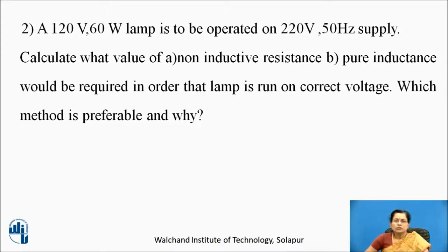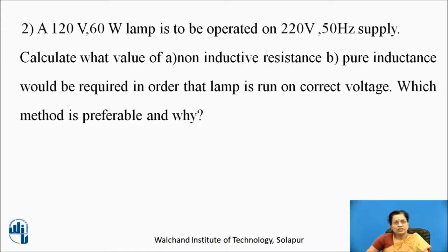Now we are going to solve the second numerical. A 120 volt, 60 watt lamp is to be operated on 220 volt, 50 hertz supply. Calculate what value of A non-inductive resistance and B pure inductance would be required in order that the lamp runs on correct voltage. Which method is preferable and why?